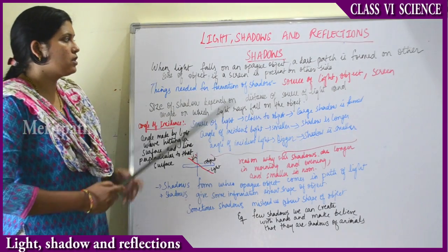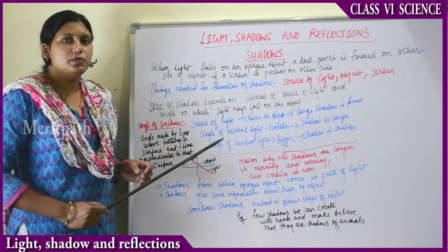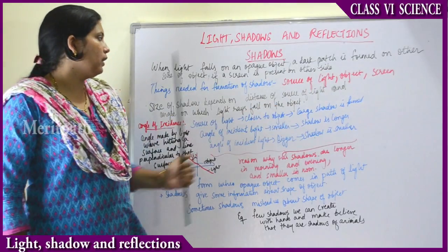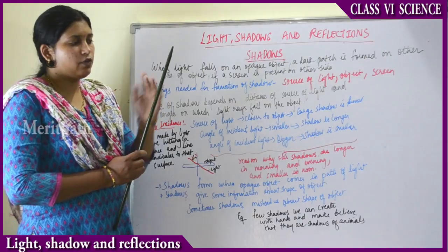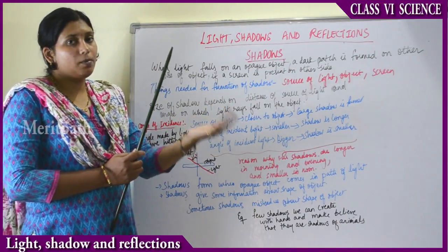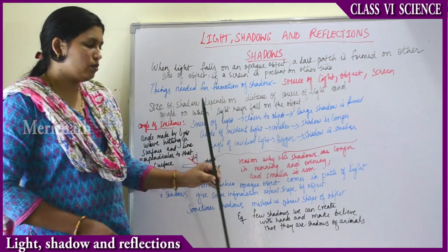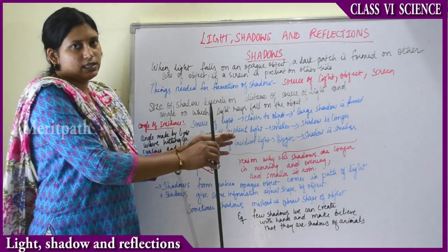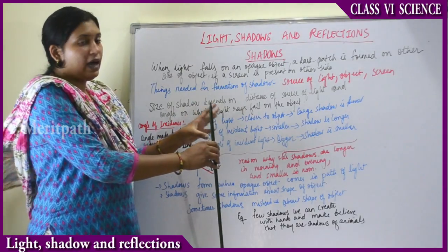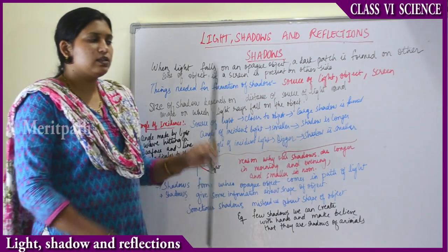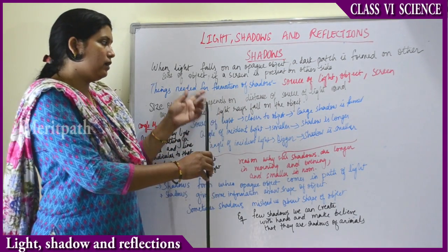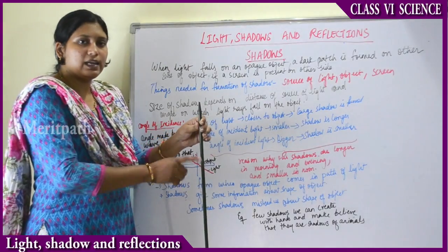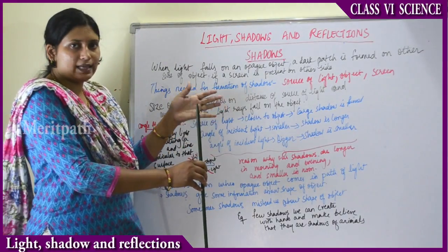Next comes shadows. When light falls on an opaque object, a dark patch is formed on the other side of the object if a screen is present there. Suppose this is an object and light is falling on it — this whiteboard acts as a screen behind. When light hits an opaque object and there is a screen like a whiteboard behind it, a dark color patch is formed — that is a shadow.